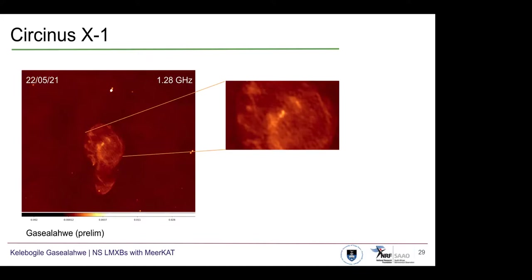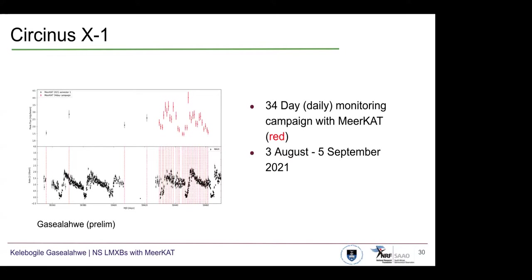Question: What's the field of view here? Answer: I'd have to double check that, I can get back to you later. Because of how the observations were spaced out, we wanted to observe potentially for a full cycle and with the opportunity were able to have a 34-day observing campaign, which was then able to include two full cycles. This campaign started on the 3rd of August and ran through to the 5th of September earlier this year.